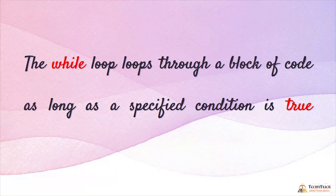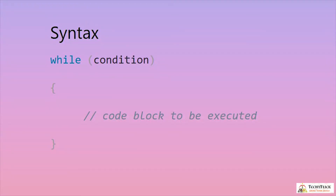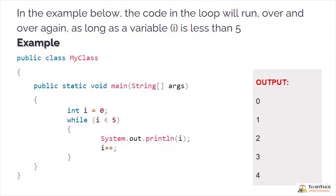The while loop loops through a block of code as long as a specified condition is true. Syntax: while(condition). In this example, the loop runs while i < 5. We declare i = 0. Print 0, increment to 1, check 1<5 — true, print 1, and so on until i=5, where 5<5 is false, condition fails, loop terminates. Output: 0, 1, 2, 3, 4.